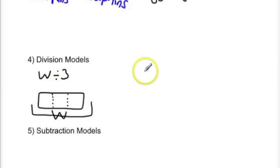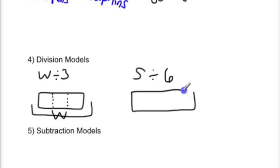And if we did another example, S divided by six, we would have a model that shows this part which would be for the unknown. We need to say that this entire part represents S and that we're going to divide it into six parts. So we would take our lines and we would do that.